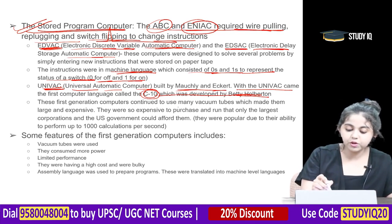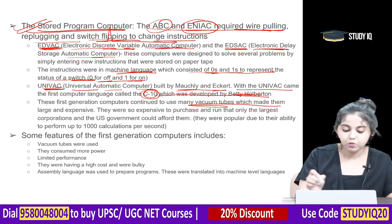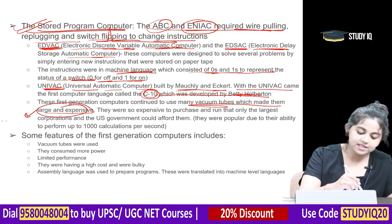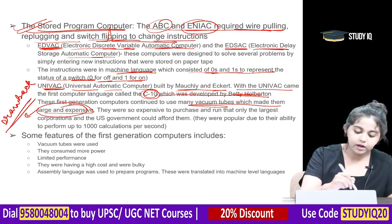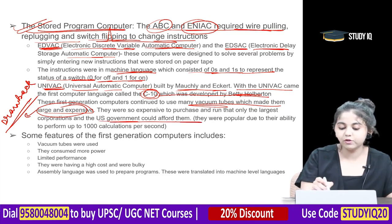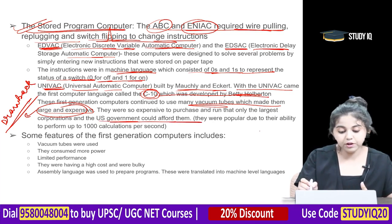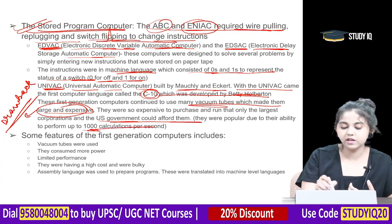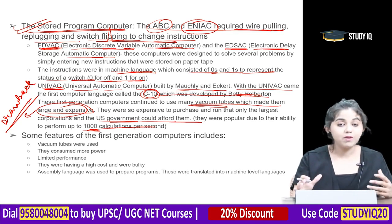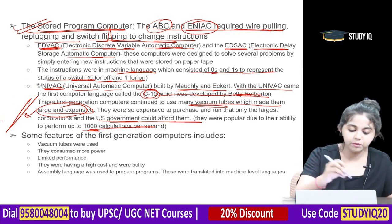First generation computers continued to use vacuum tubes, which made them large and expensive. Only the largest corporations and the US government could afford them. They were popular due to their ability to perform 1,000 calculations per second. However, they were very expensive and cumbersome — this was the major drawback of first generation computers.